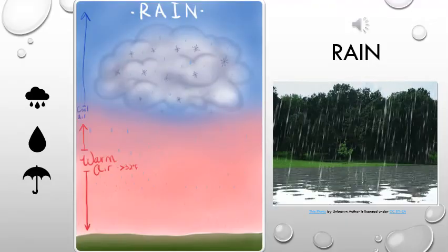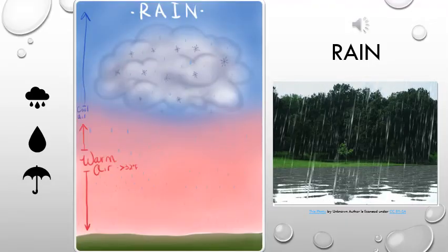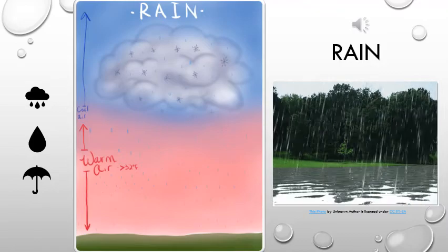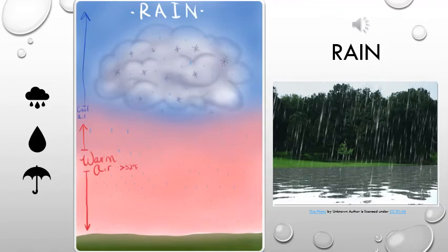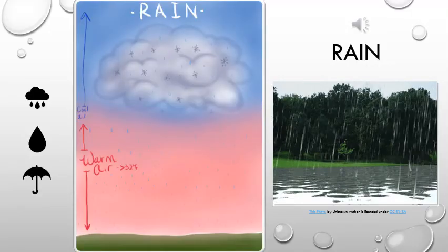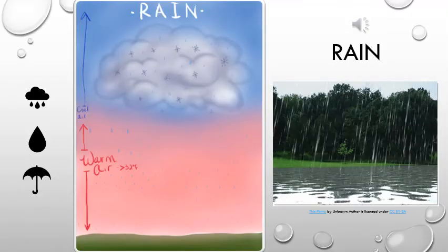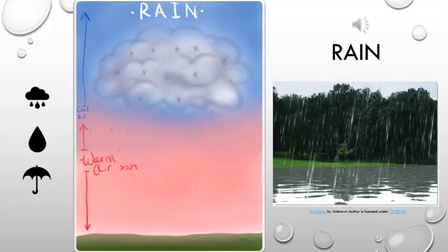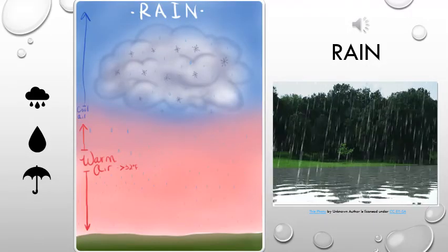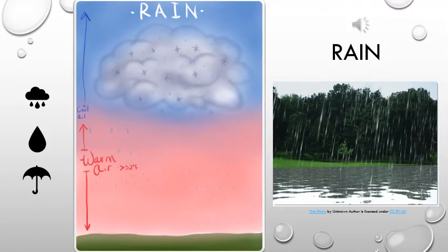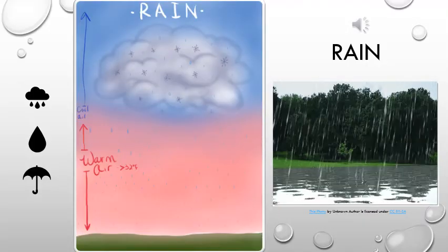A common misconception is that rain falls when the clouds get too heavy. Actually that's not the case. Rain falls when the water droplets become too big or too heavy to be held up in the cloud. Also, it doesn't rain whenever we need it to. Think about floods and droughts. If it rained when we needed it to, we wouldn't have those issues.